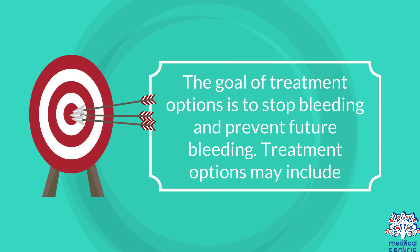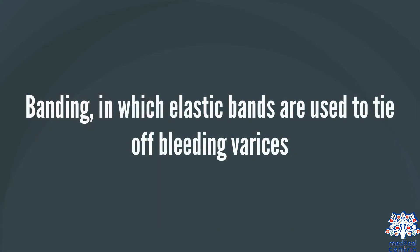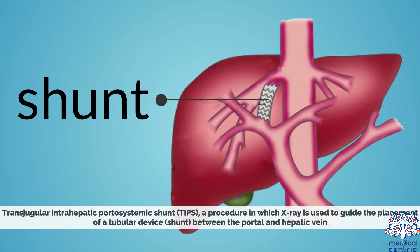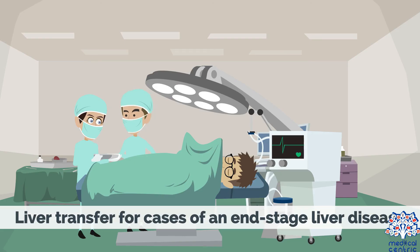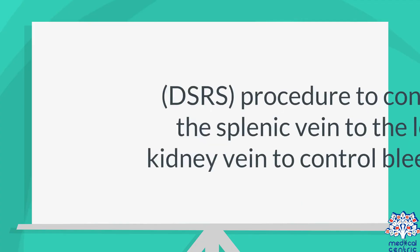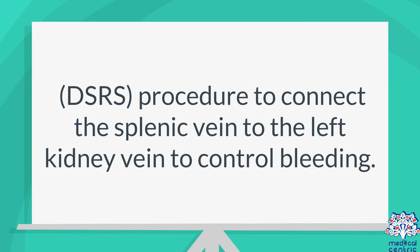The goal of treatment options is to stop bleeding and prevent future bleeding. Treatment options may include banding, in which elastic bands are used to tie off bleeding varices; transjugular intrahepatic portosystemic shunt, or TIPS, a procedure in which x-ray is used to guide the placement of a tubular device, or shunt, between the portal and hepatic vein, creating a diversion for blood flow; liver transplant for cases of end-stage liver disease; and distal splenorenal shunt, or DSRS, procedure to connect the splenic vein to the left kidney vein to control bleeding.